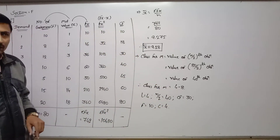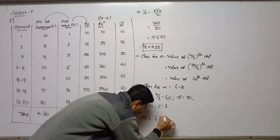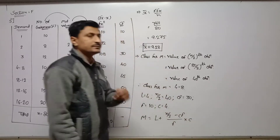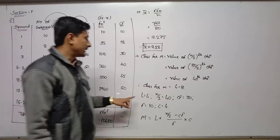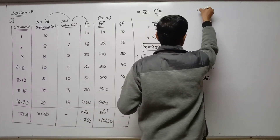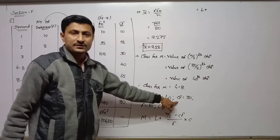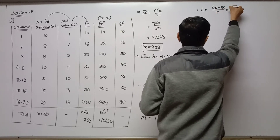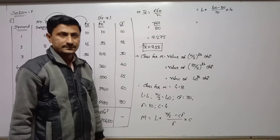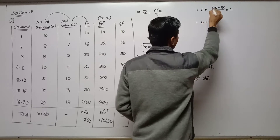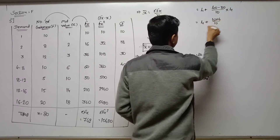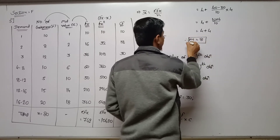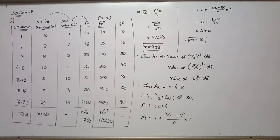Write the formula for median: M = L + (n/2 − CF) / F × C. Putting all values: L = 4, n/2 = 40, CF = 30, difference = 40−30 = 10, frequency F = 10, class length = 4. So 4 + (10/10)×4 = 4 + 4 = 8. Value of median is 8.